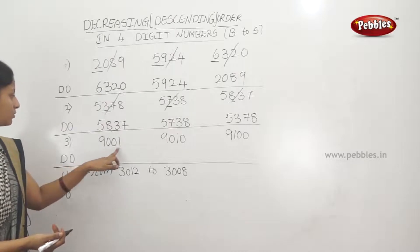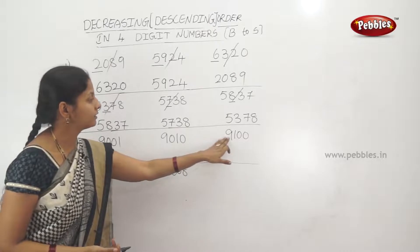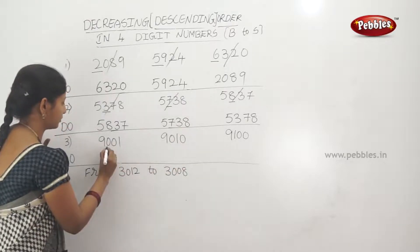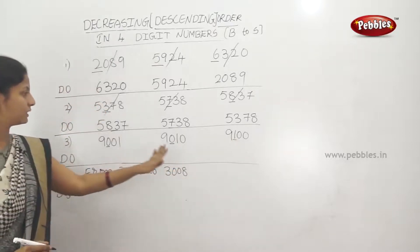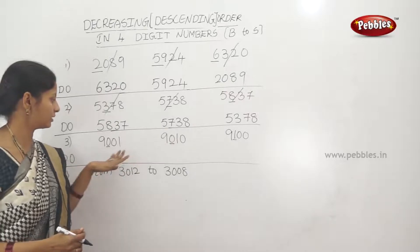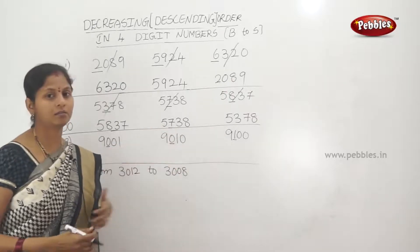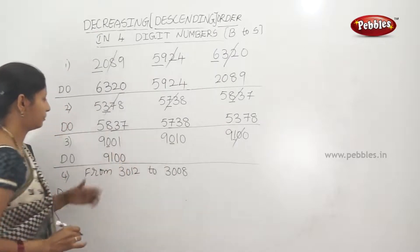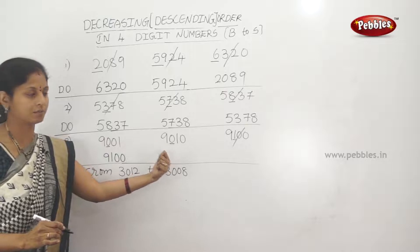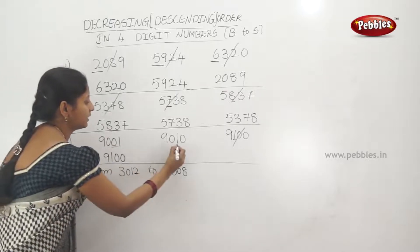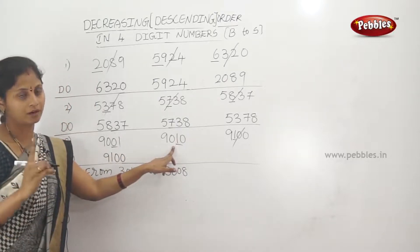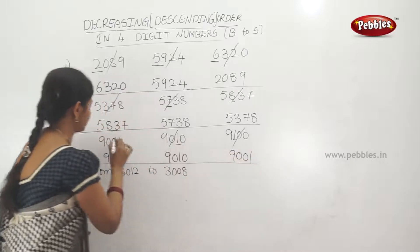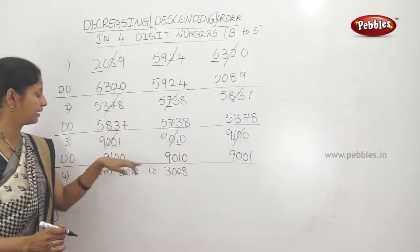Next example: 9,001; 9,010; 9,100. First digits all 9 — same. Second digits: 0, 0, 1. The number with second digit 1 is biggest, so 9,100 is first. Remaining two have second digit 0, so compare third digits: 0 and 1. Third digit 1 is bigger, so 9,010 is next. Last is 9,001. Descending order: 9,100; 9,010; 9,001.